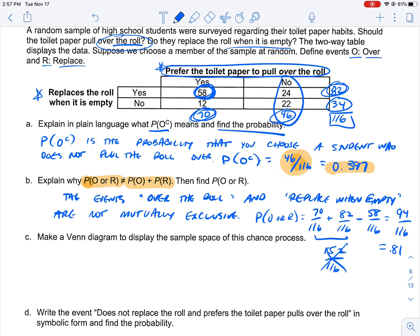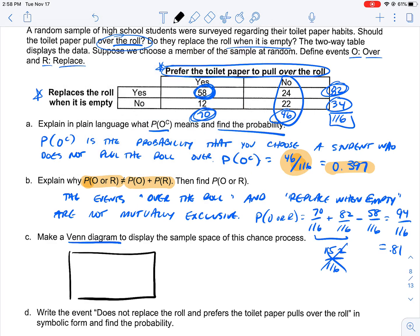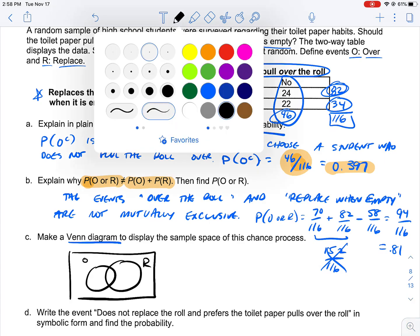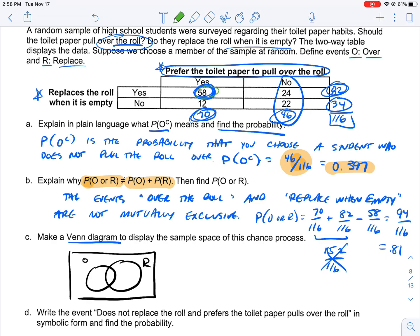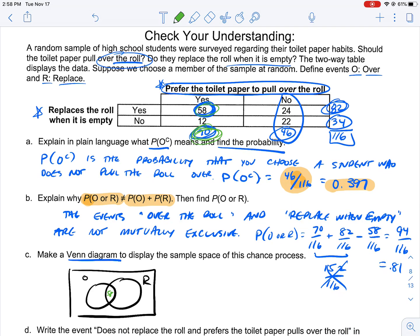When we make this Venn diagram to display these results, we have our two circles. Let this one be O, let's let this one be R. In the middle goes what is shared. I'm going to put 58 in the middle here. To talk about they go over the roll, there's 70 total, so the 12 goes here. I'm going to put my 12 here, and then this is 24.